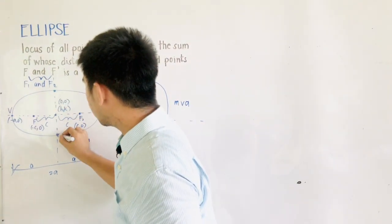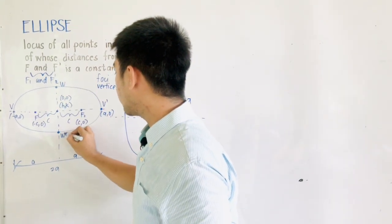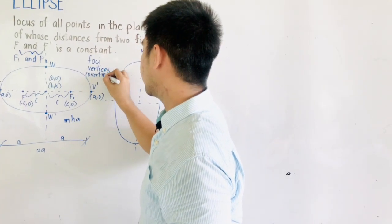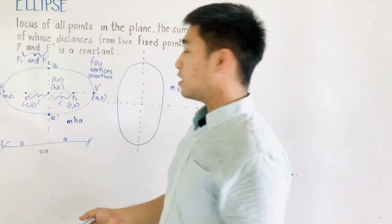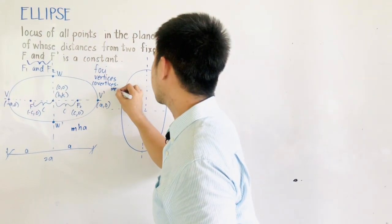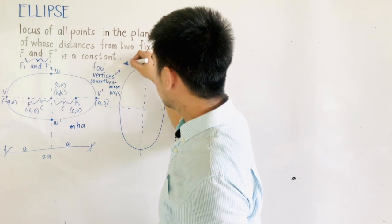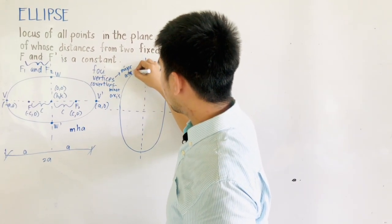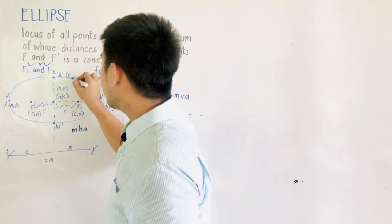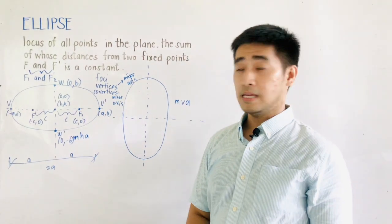The other endpoints are called W and W', which we call co-vertices. The co-vertices lie on the minor axis, while the vertices lie on the major axis. For the horizontal ellipse, the co-vertices are at coordinates 0 and B, and 0 and negative B.